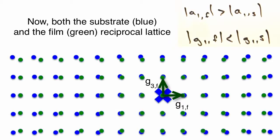And because the thin film has a bigger lattice in real space, it has a smaller reciprocal cell. So as we move out in reciprocal space, we see the spacing between the film and the substrate lattice points get bigger.